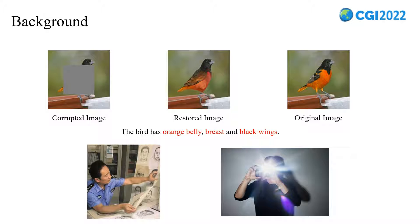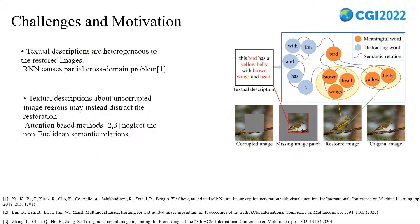Text-guided image inpainting restores corrupted images into complete and clear images by generating semantically plausible content from various textual descriptions. Specifically, textual guidance can be complementary to the corrupted images with complicated things such as unique masks on objects or large holes. Text-guided image inpainting can be applied to real-world scenarios for restoration purposes, such as drawing a profile of a criminal whose face is covered according to the description of witnesses, and fixing an overexposed close-up photo whose main character is erased.